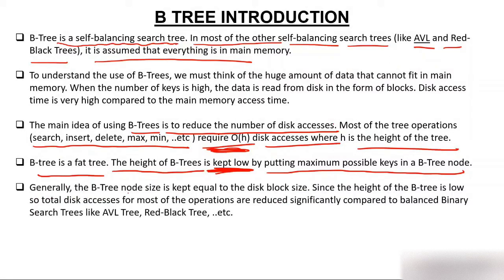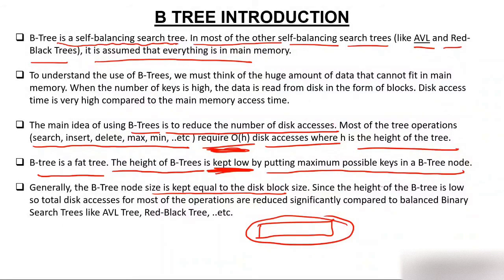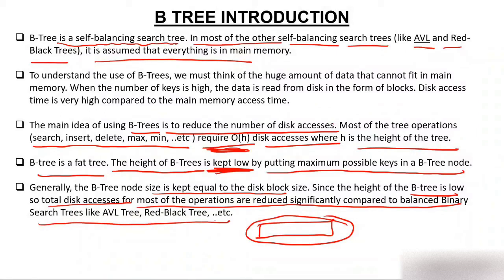The B-tree node size is kept equal to the disk block size. Since the height of B-tree is low, the total disk accesses required for most operations are significantly reduced compared to balanced trees such as AVL and Red-Black trees. Since height is low, the time required to access a disk will be low. This is the main reason behind creating a B-tree.